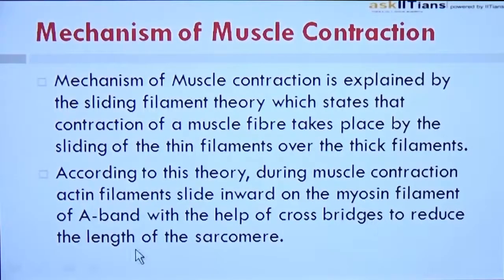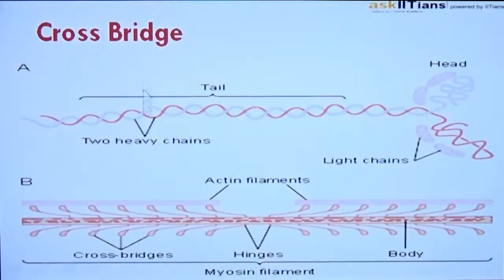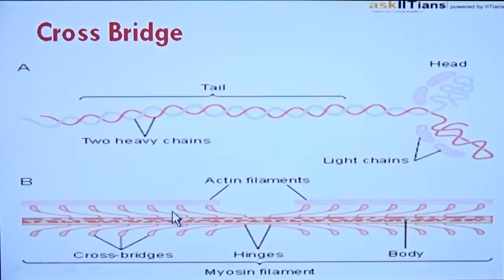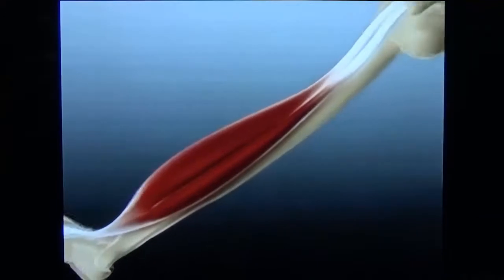Once the cross bridge is formed, the length of the sarcomere will reduce, which in turn will cause the contraction of the muscle. You can see cross bridges here being formed between the actin and myosin filaments. The thick filaments move the thin filaments over them; the thin filaments slide over the thick filaments, and this bridge causes shortening of the sarcomere, which causes muscle contraction. We can see this with the video here.